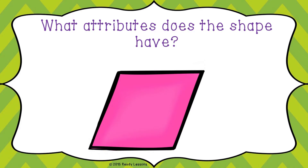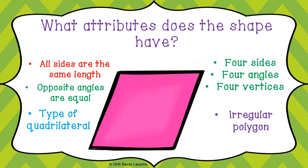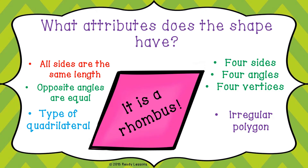Look at the figure. What attributes does the shape have? All sides are of the same length. Opposite angles are equal. This is an example of a quadrilateral. It has four sides, four angles, four vertices, and this is a regular polygon. What is the name of the shape? It is a rhombus.